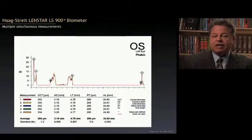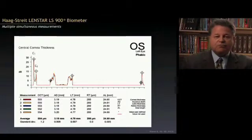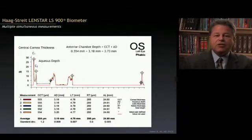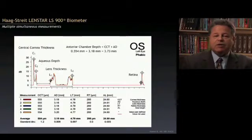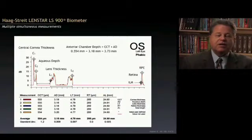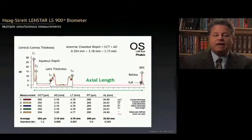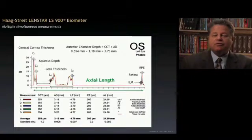This is what the axial length display looks like for the LenStar. We have the anterior and posterior corneal spikes, the aqueous depth, and if we add central corneal thickness together with aqueous depth we get anterior chamber depth. Lens thickness shows the anterior and posterior lens capsule and anatomy in between. Then we have the vitreous cavity and two spikes on the retina — one is the vitreoretinal interface or internal limiting membrane, and the other is the pigment epithelium. Put it all together and that gives us the axial length. We have five measurements, and information from all five gives us a final value with a standard deviation.